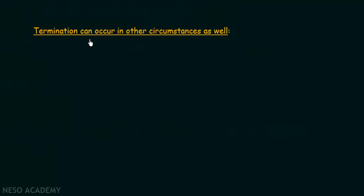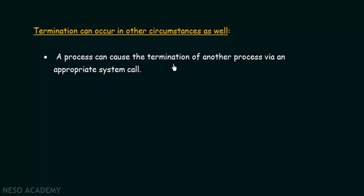Termination can occur in other circumstances as well. Beyond a process finishing its own execution, a process can also cause the termination of another process via an appropriate system call.